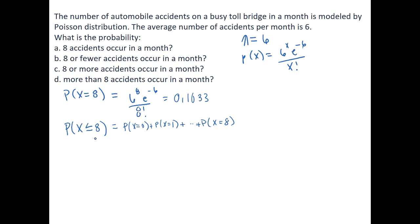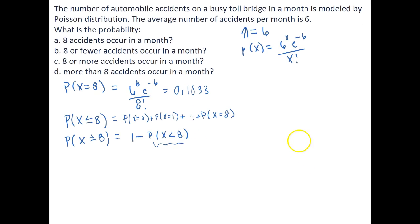In C it asks what is the probability 8 or more accidents occur in the month? This is equal to the probability that x is greater than or equal to 8, which if we want to write this in terms of the CDF we can take its complement. So 1 minus the probability that x is less than 8. Let's write this as an expression that has the equality, the same as the CDF. This will be equal to 1 minus the probability that x is less than or equal to 7.